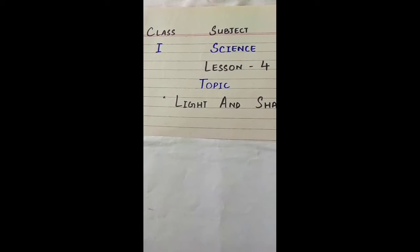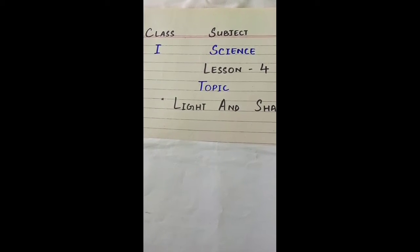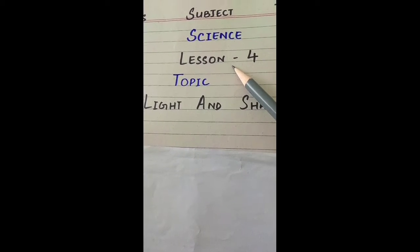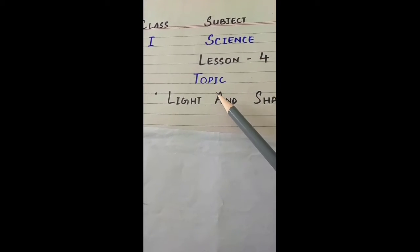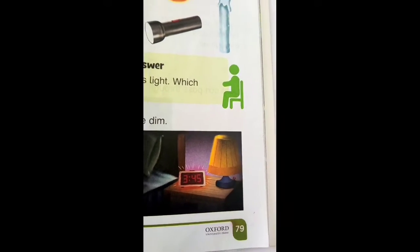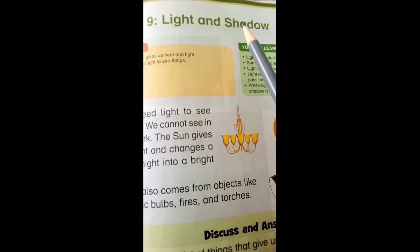Assalamu alaikum, my dear students. Hope you all are safe and fine in this pandemic by the grace of Allah Azzawajal. I hope all of you have done your previous work of subject science, lessons one, two and three in your books neatly. Today we are going to start lesson number four of subject science, and our topic is light and shadow. Open your books to page number 79.